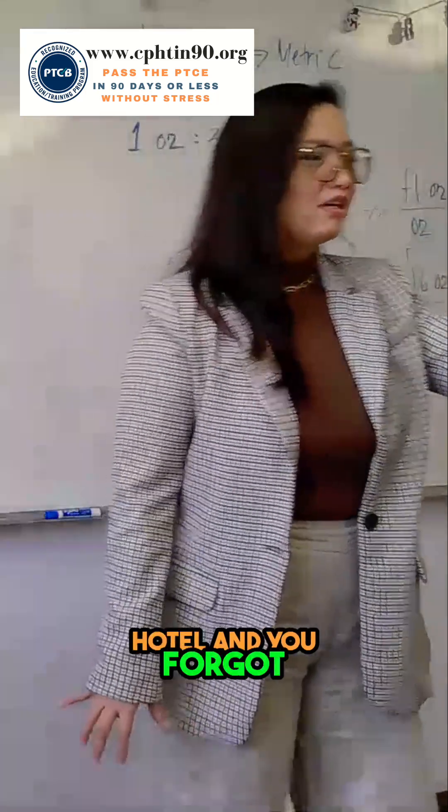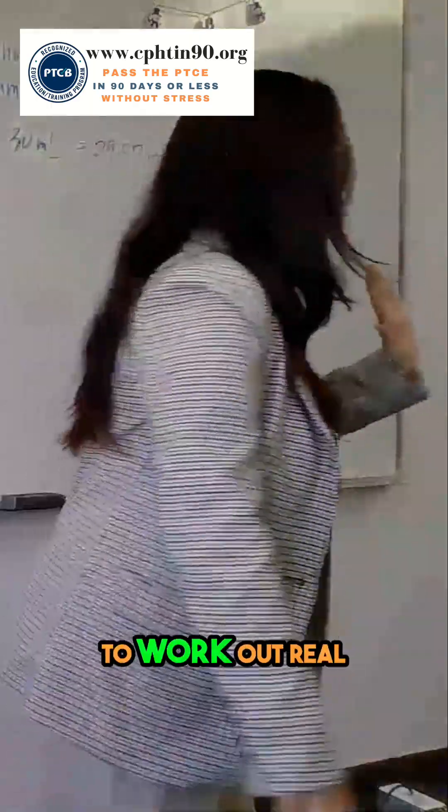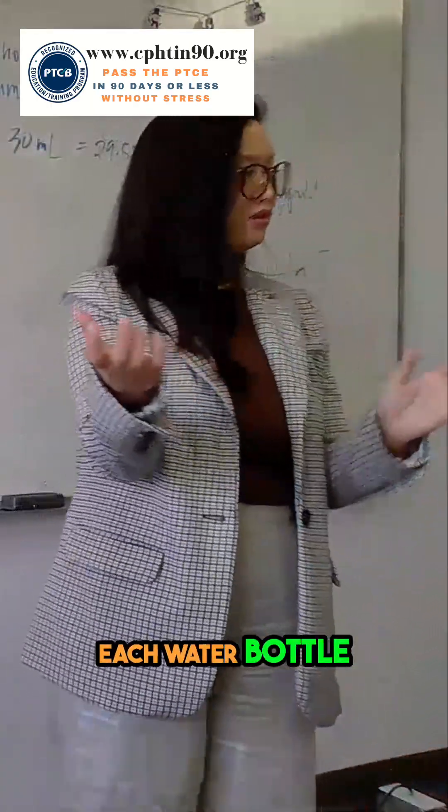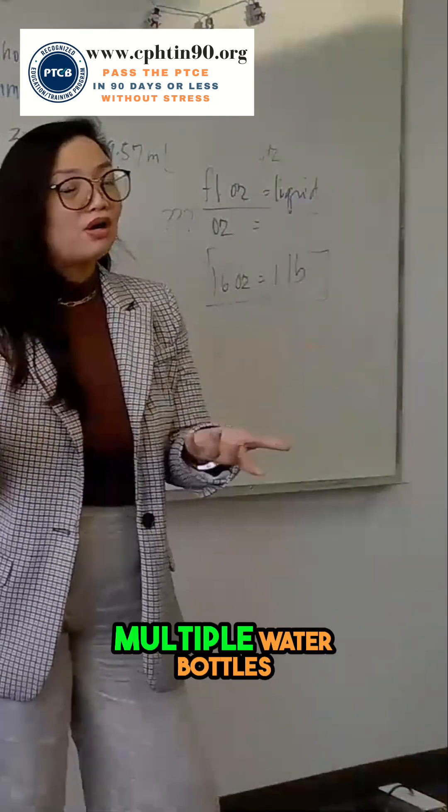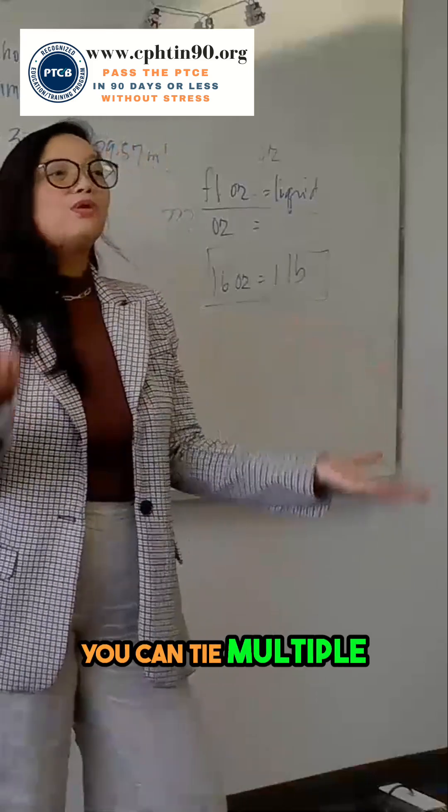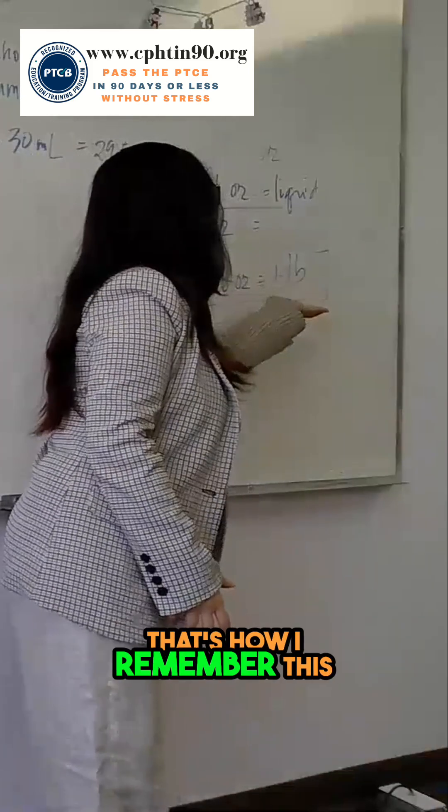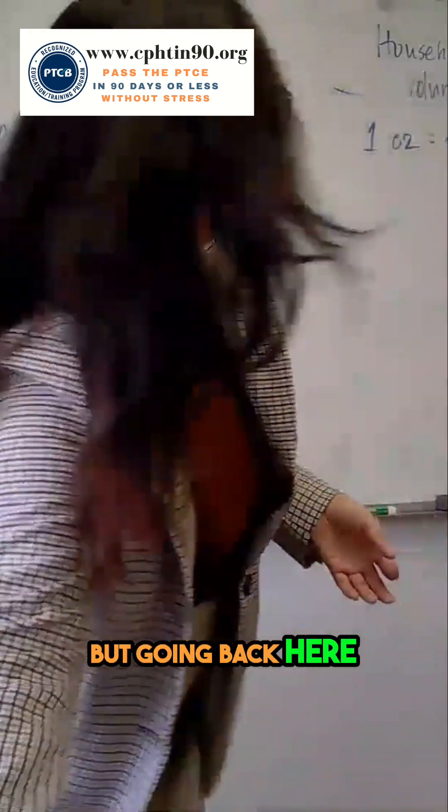If you're in a hotel and you forgot your sneakers so you can't use the gym, or you just want to work out real quick in your room, do some weights. Each water bottle, not the fancy one, not the bougie one, is 1 pound. So you can tie multiple water bottles, because usually we have water bottles in our hotel room. You can tie multiple water bottles and use that as your weight. Each one is 1. That's how I remember this, 16 ounces is 1 pound. But going back here,